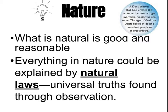Enlightenment thinkers believed that the natural world is good and sought natural laws to explain why things happen — universal truths found through observation and scientific experiment. Many still believed in God, thinking that God created the earth and put natural rules and laws in place, but that it runs without divine intervention. People who believed this were called deists, and they believed God no longer intervened in people's daily lives because he had set these natural laws in place.